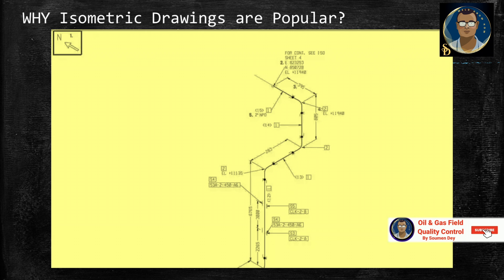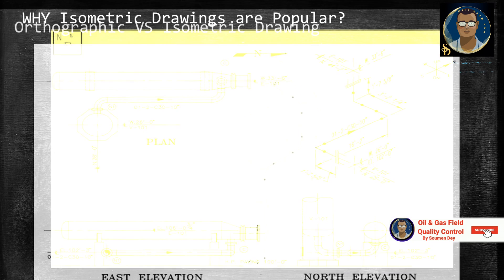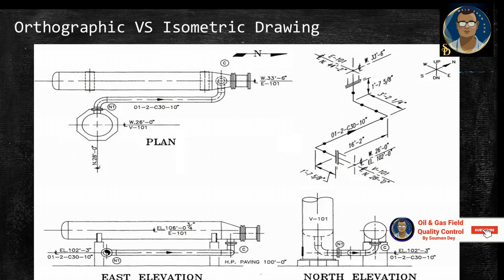In earlier days, isometric drawings were hand drawn. With the innovation and advancement of the digital age, isometrics are drawn by AutoCAD, MicroStation software. In recent days, 3D models could automatically extract the isometric drawing with a single click of a mouse.